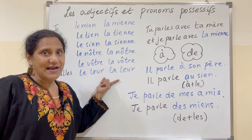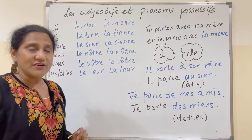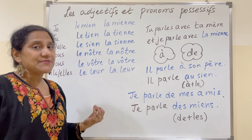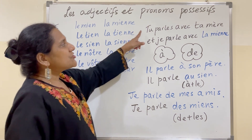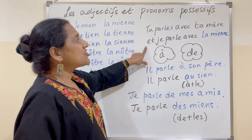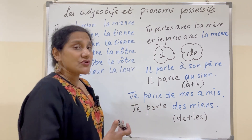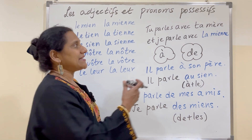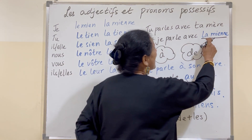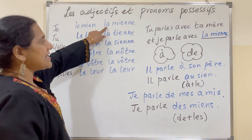For the plural form you need to add an S to the singular form. Now let's take a few examples and recap some important points. Tu parles avec ta mère et je parle avec la mienne. You speak to your mother, I speak to mine. So it becomes la mienne here, because it's my mother — la mienne.